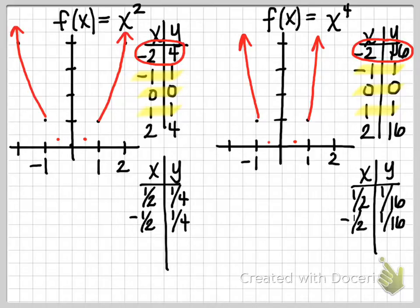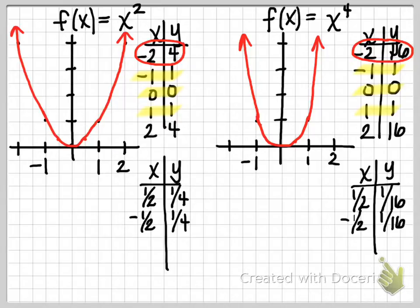So between negative 1 and 1, y equals x to the fourth is still that nice U shape, however it's going to be flatter — getting much closer to the x-axis. The higher power, when we look at these fractional inputs like one half or negative one half, produces very small outputs. The higher power results in very small y values, which causes the graph to be much closer to the x-axis.